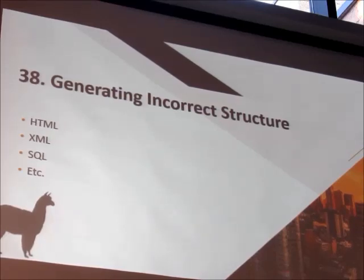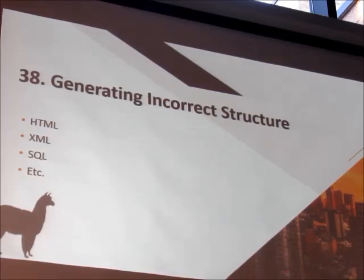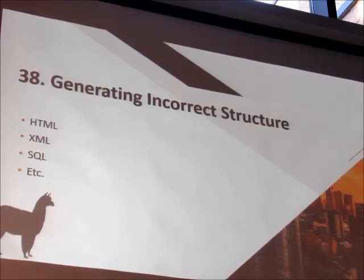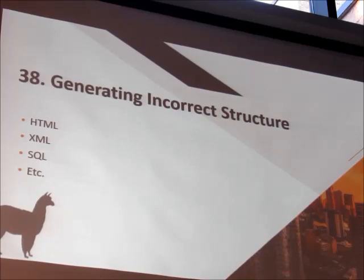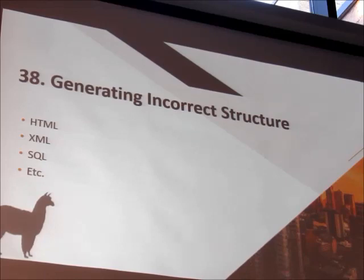For example, in HTML, when creating a table, you might attempt to add table data directly under the table, forgetting to add a table row first. In Kotlin, you can have a DSL that allows you to define HTML, and if you try to use table data directly inside table, it wouldn't even compile — that's not even an available function. But as soon as you define a table row, magically a new function becomes available: table data. DSLs are a way of preventing huge categories of defects that you can represent in some structured form.